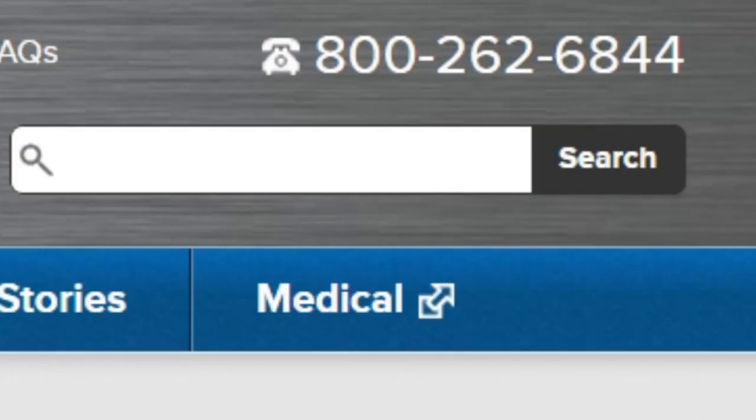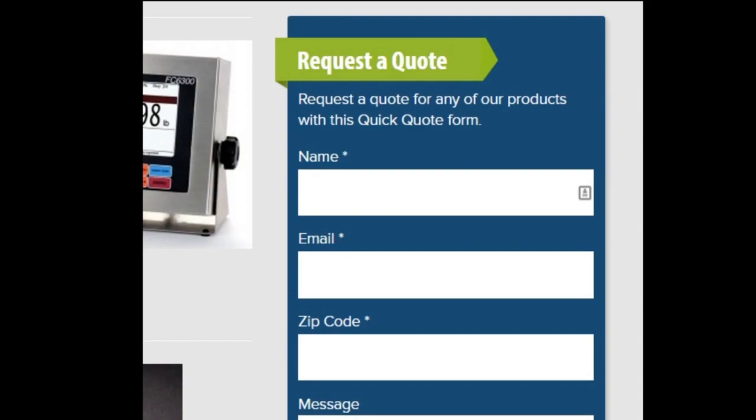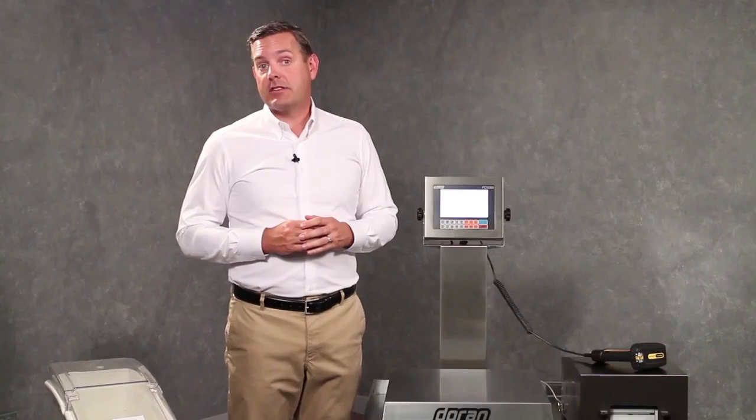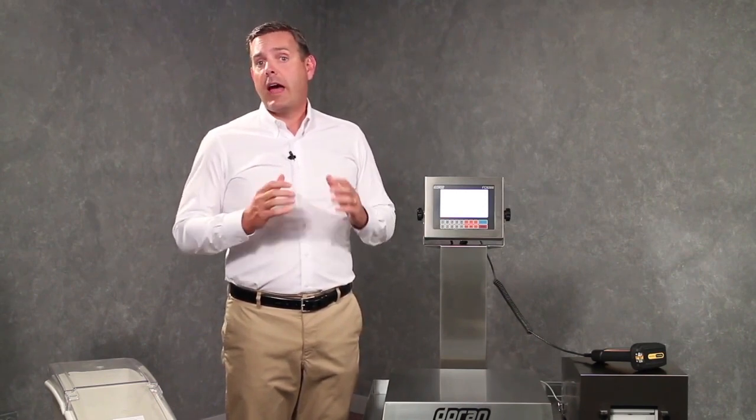Take the next step right now and either call us at 800-262-6844 or simply fill out the request a quote form right here on our website. Simply tell us that you are interested in the FC6300, add your name, email, zip code, and click send. Once we receive that message, we will contact you to discuss your specific needs.